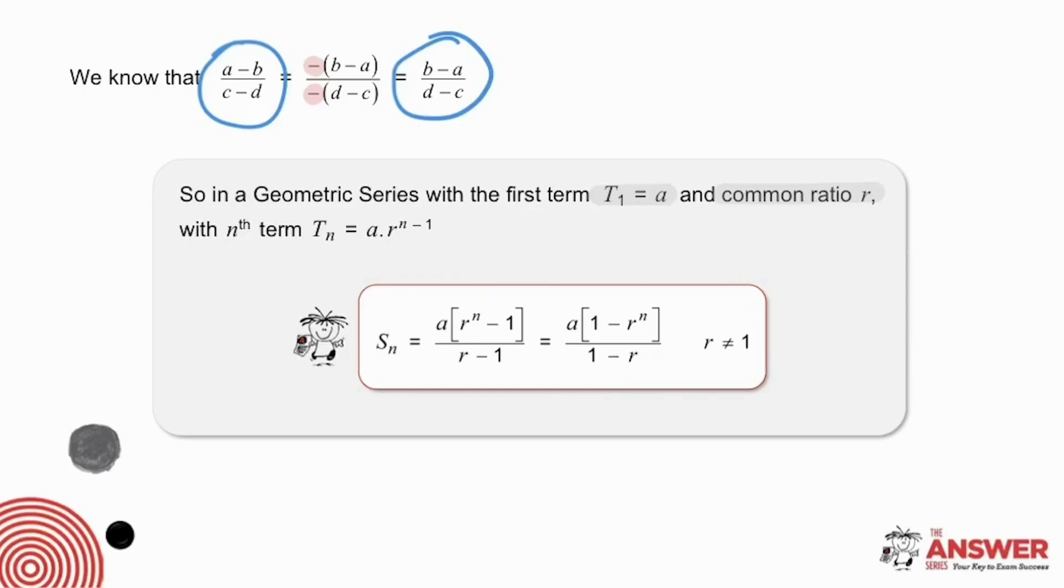Important to note here that if r was 1, we would be dividing through by 0 and we don't want to be doing this. So therefore it is stated that r is unequal to 1. Now that an understanding has been established around this, let's continue.